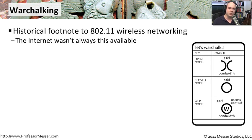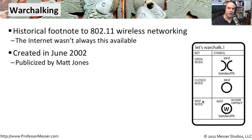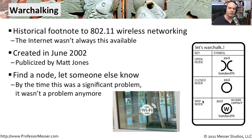So there was this concept created called war chalking. If you were fortunate enough to find somebody who had a wireless network, a gentleman called Matt Jones created these set of symbols. You could look on the sidewalk or on the wall where someone would have written in chalk some of these symbols to know whether there was an open node, a closed node, or one that was wirelessly encrypted — a WEP node. There was no WPA back in those days. If you found one that was available, you could tell the world by drawing a big symbol on the sidewalk or wall to let everyone else know.